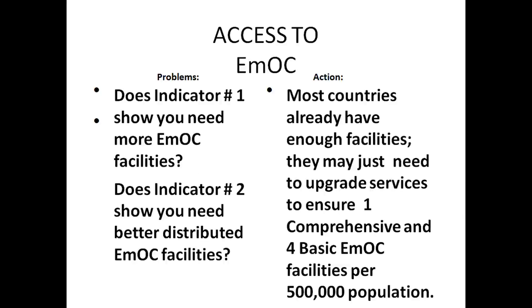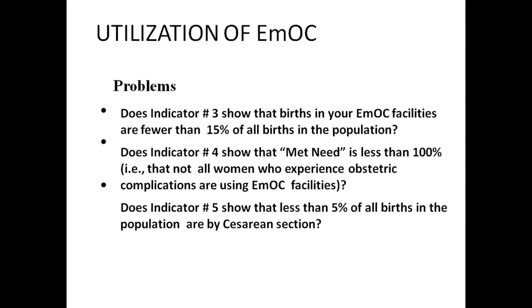Access to EMOC — the problems. Indicator 1 shows you the need for more facilities. Indicator 2 shows the need for better distributed EMOC facilities. Most countries already have enough facilities; they just need to upgrade services to ensure one comprehensive and four basic EMOC facilities per five lakh population. Indicator 3 shows if fewer than 15% of births in the population occur in EMOC facilities. Indicator 4 (met need) showing less than 100% means not all women with obstetric complications are using EMOC facilities.